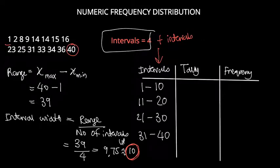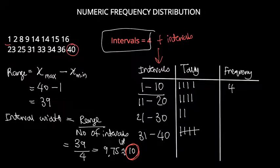If we now tally this data, we can see which data values are included in the first interval. It's 1, 2, 8, and 9. Our next interval is 14, 14, 15, and 16. Our next interval is 23 and 25. Our last interval is 31, 33, 34, 36, and 40. That gives us frequencies of 4, 4, 2, and 5. And if you add this up, you should get the number of observations, which is 15.